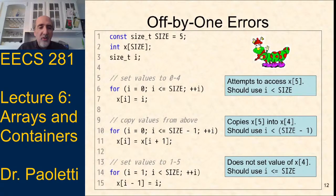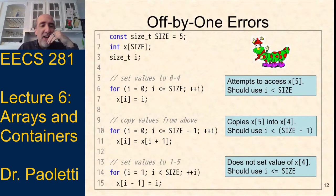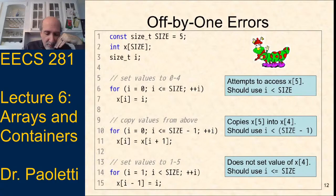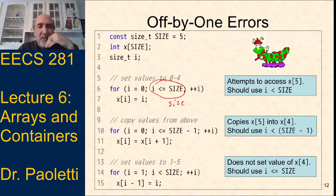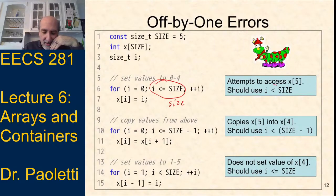There are a bunch of off-by-one errors to watch out for — I've already seen someone in project one make this mistake. Remember we need the index to be strictly less than the size, not less than or equal to. Be careful with those.